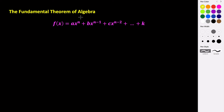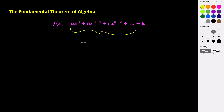In this video we're talking about the fundamental theorem of algebra. What the fundamental theorem of algebra says is if you're given some nth degree polynomial in this form, it will have exactly n roots. So any nth degree polynomial has n roots.